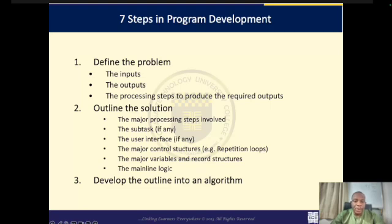From the previous video, we talked about being able to define a problem, outlining your solution, developing an outline to an algorithm, testing the algorithm for correctness before you start coding the algorithm into a specific programming language. You then run the program on a computer, and if it works as expected, you document and maintain the program. These are the seven steps that you need to follow when programming a software.